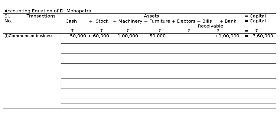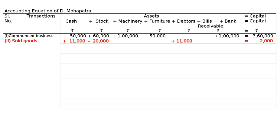Transaction 2: One third of the goods were sold at a profit of 10% on cost, and half the payment was received in cash. One third of stock (60,000) is 20,000 — so minus 20,000 from stock. Sold at 10% profit: 20,000 plus 2,000 equals 22,000. Half cash is 11,000 and half credit means debtors 11,000. A profit of 2,000 is added to capital.